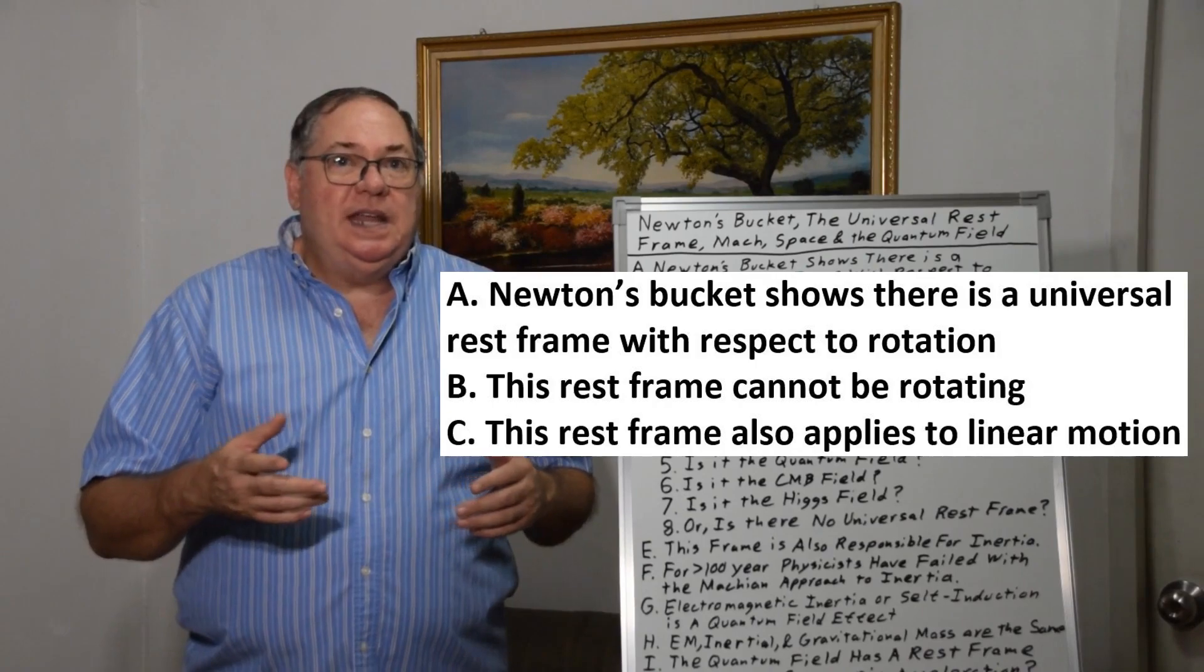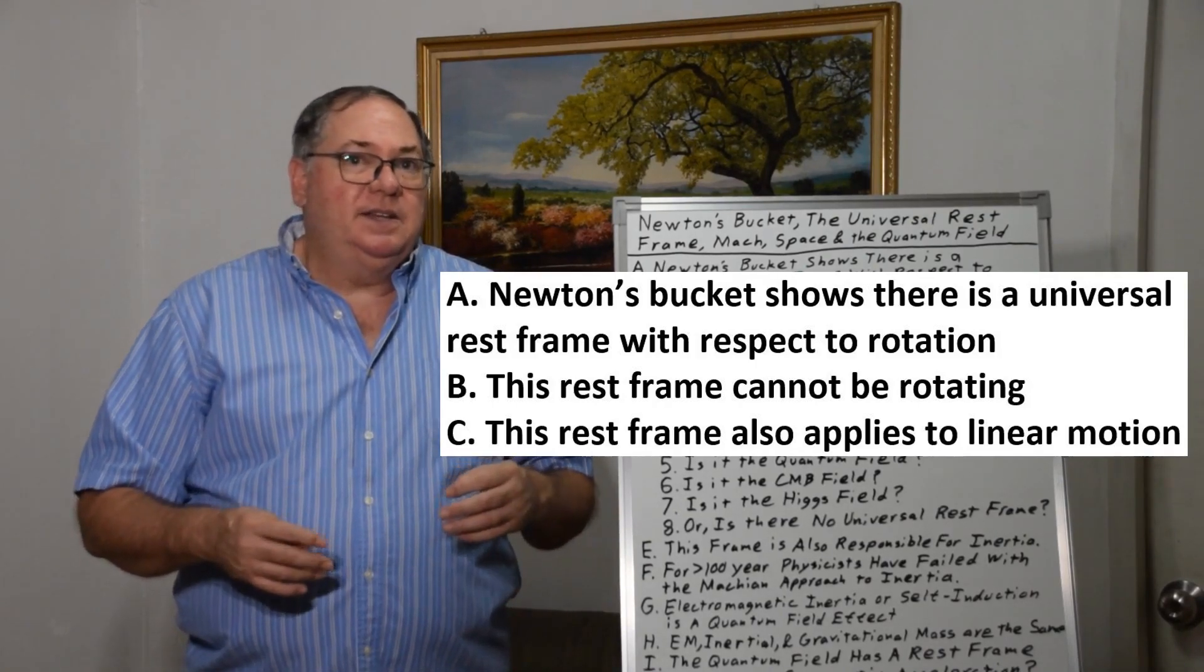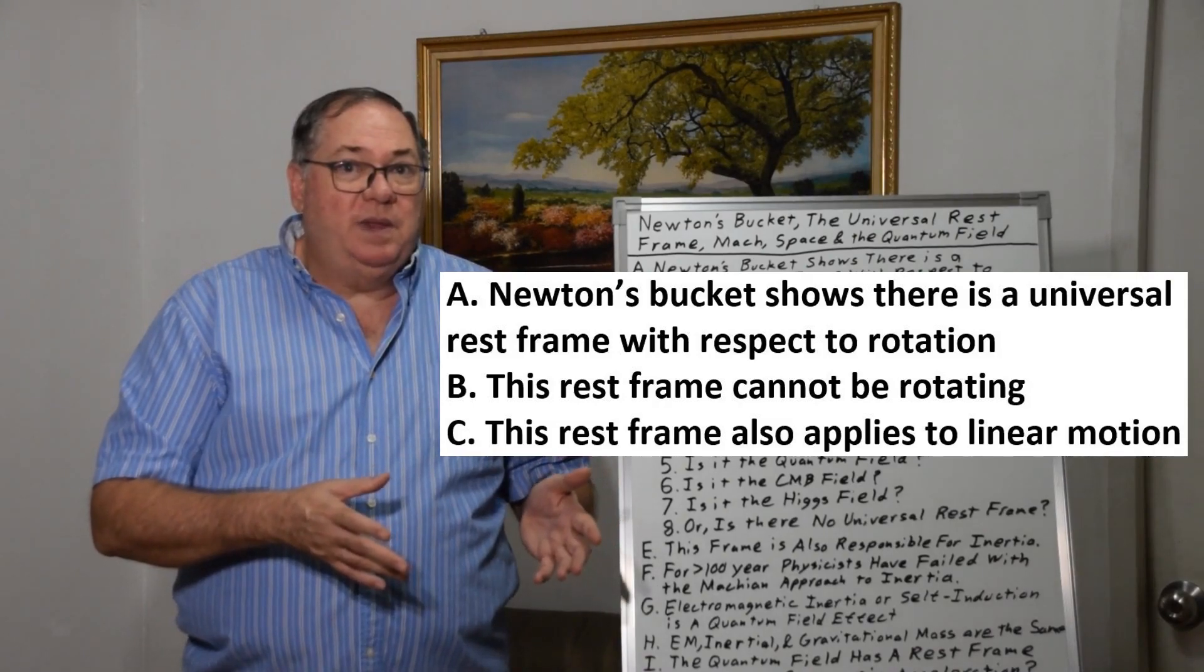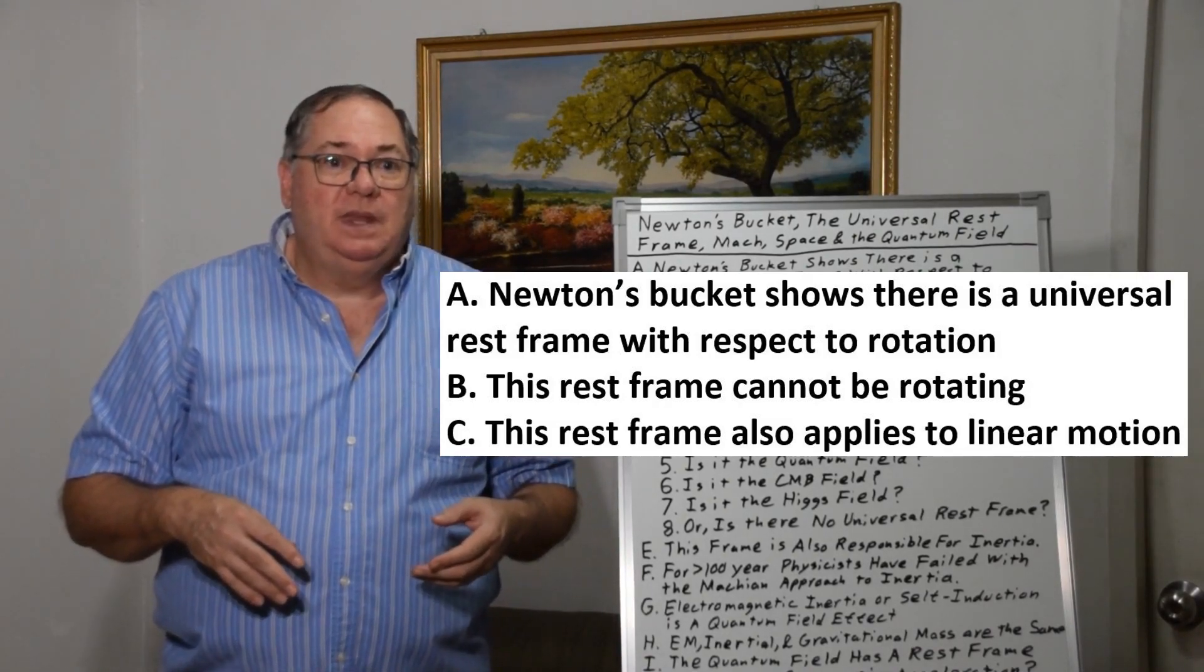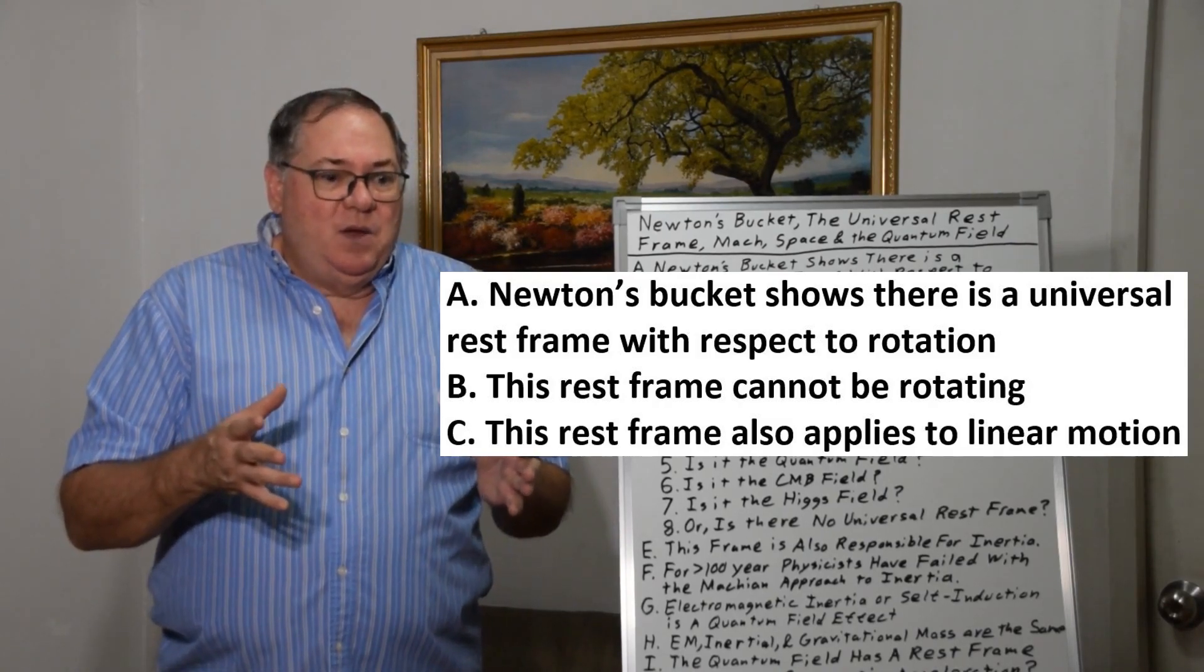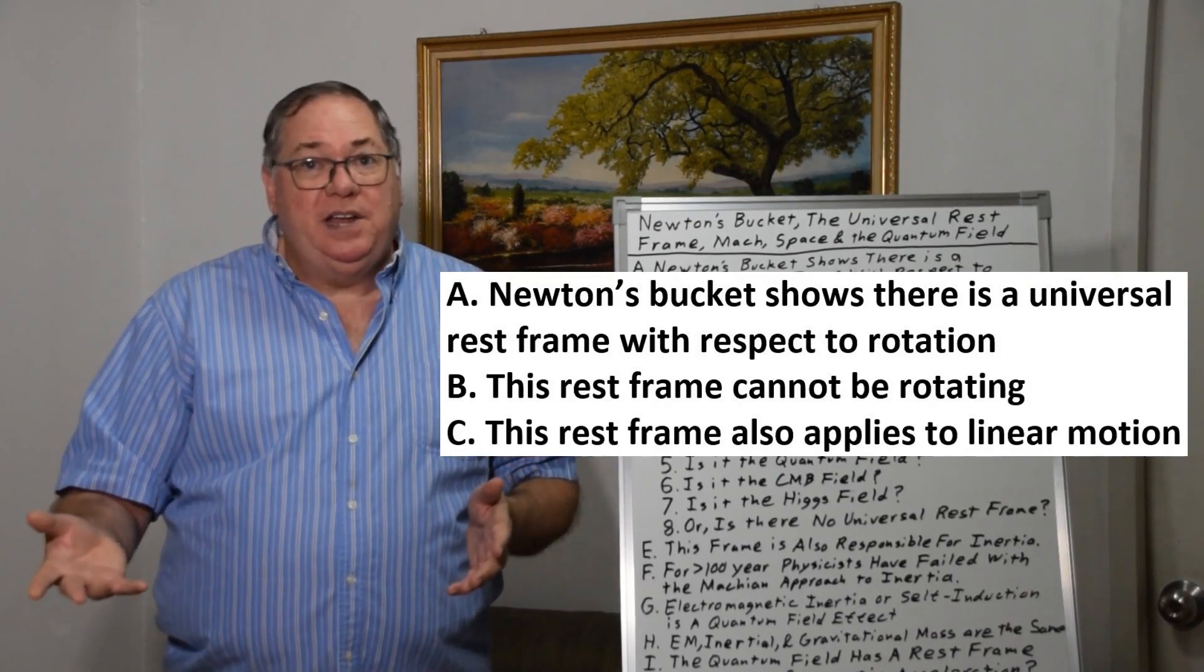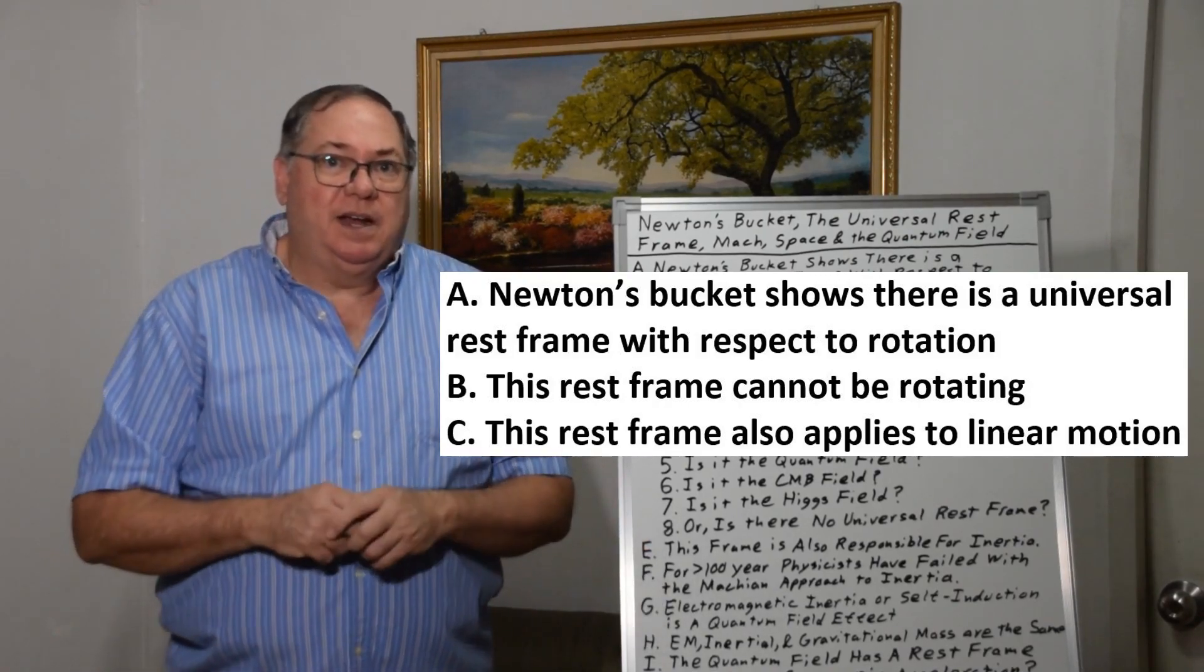Now, we can see, even if we're stationary on Earth, we can see things like the Coriolis effect that tell us the Earth's rotating. So, we have experiments we can do without actually having to monitor the Earth from space. And if you have a universal rest frame with respect to rotation, you have one with respect to linear motion, even though you can't detect it directly.